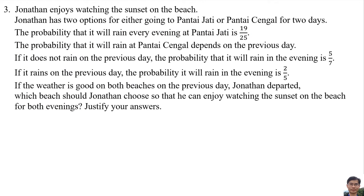Question 3: Jonathan enjoys watching the sunset on the beach. Jonathan has 2 options: going to Pantai Jati for 2 days. The probability that it will rain every evening at Pantai Jati is 19 over 25. The probability that it will rain at the other beach depends on the previous day — if it does not rain on the previous day, the probability that it will rain in the evening is 5 over 7. If the weather is good on both beaches on the previous day, Jonathan departs. Which beach should Jonathan choose to enjoy watching the sunset on both evenings?